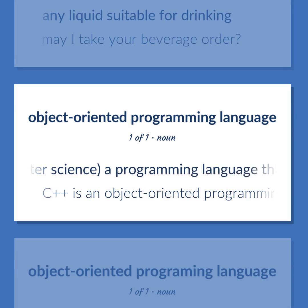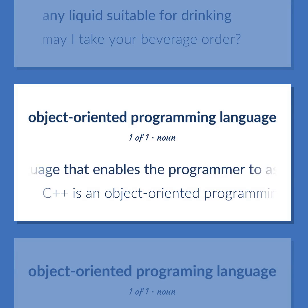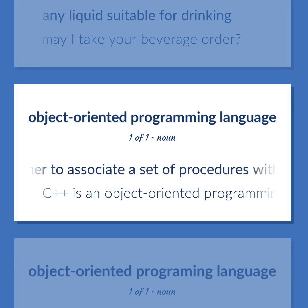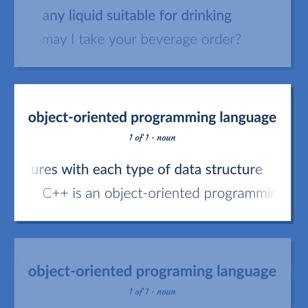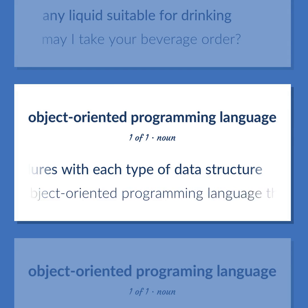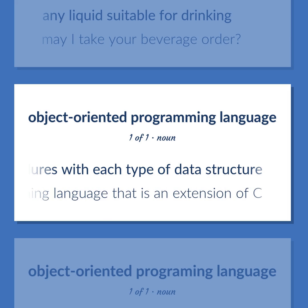Object-oriented programming language: a programming language that enables the programmer to associate a set of procedures with each type of data structure. Example: C++ is an object-oriented programming language that is an extension of C.